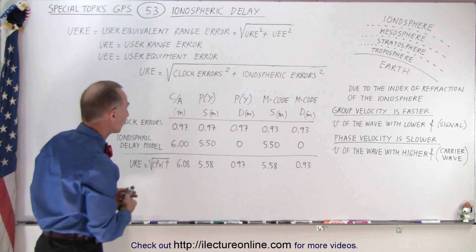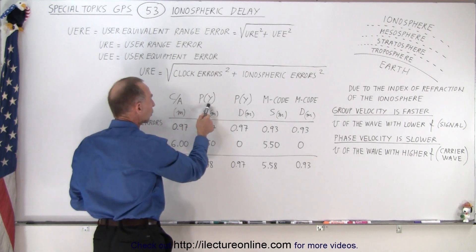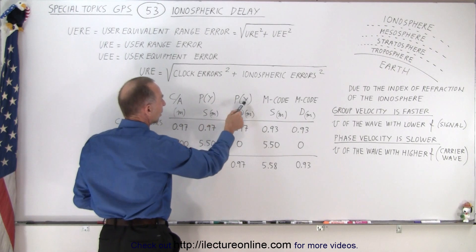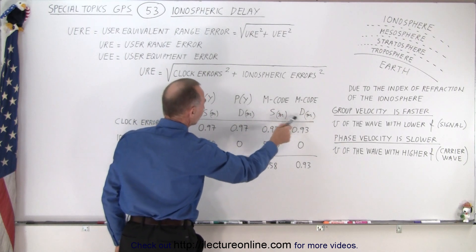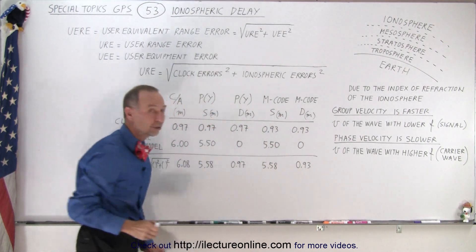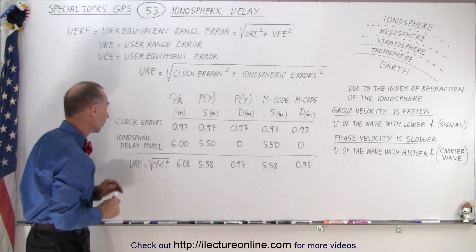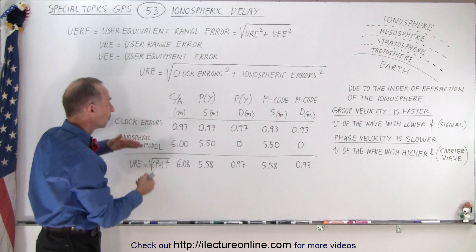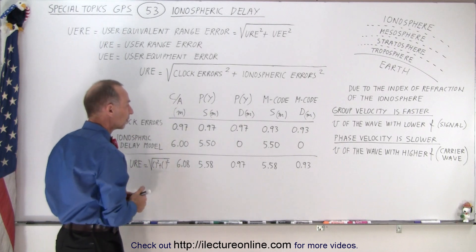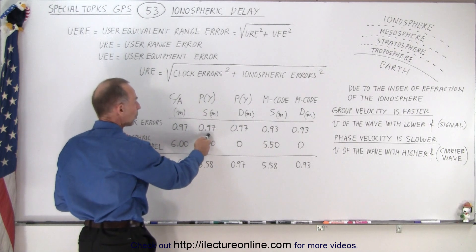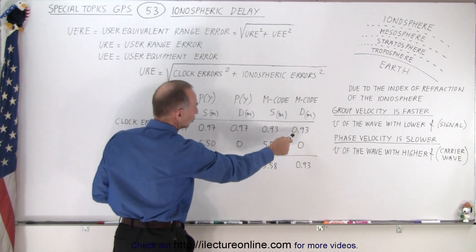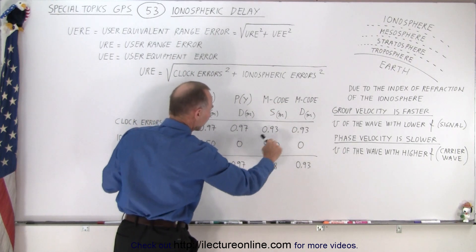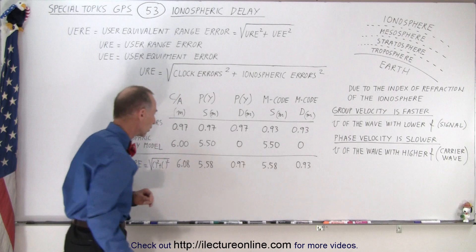You can see that for CA code, Y code in single channel, Y code in dual channel, M code in single channel, M code in dual channel, we will have different values for the various components. Now the clock errors are fairly similar for all five possibilities of signal. So for CA, Y code single, Y code dual channel, M code single, and M code dual channel, notice there's not a lot of difference. Slightly better for the M code.